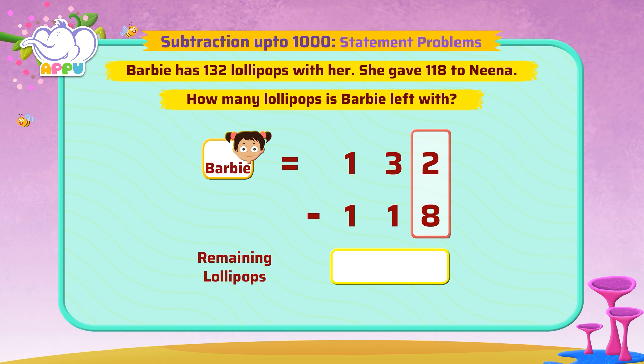We subtract ones first. We cannot subtract 8 from 2, so we borrow from the left column, which is the tens column. When we do this, 3 tens become 2 tens and we get 1 to the ones column. So now we have 12.